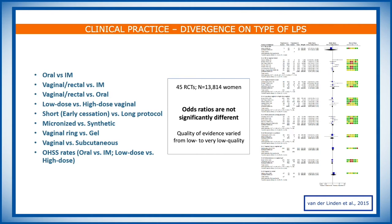However, if we ask ourselves the question of how to supplement the luteal phase, the evidence is less clear. There are different molecules to use, different routes to use. And when you compare all these RCTs, there seems to be no advantage of using one over the other. However, the Cochrane review also states that most of this evidence is of low to very low quality.